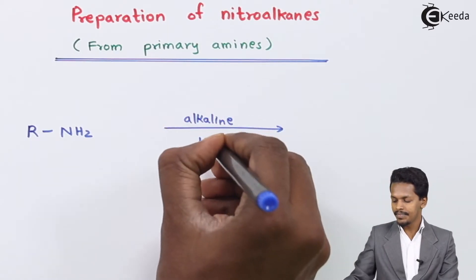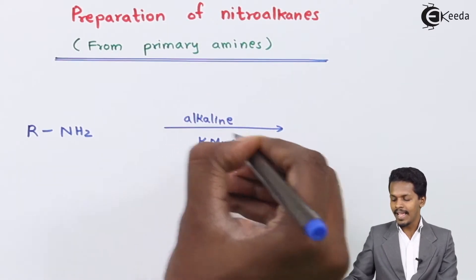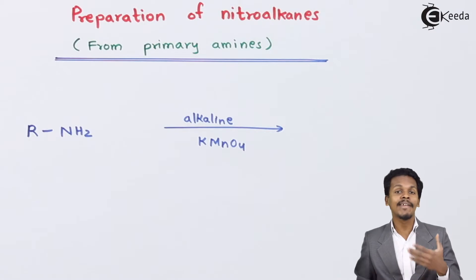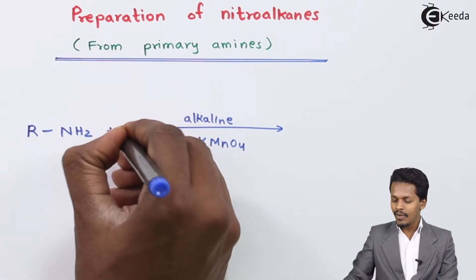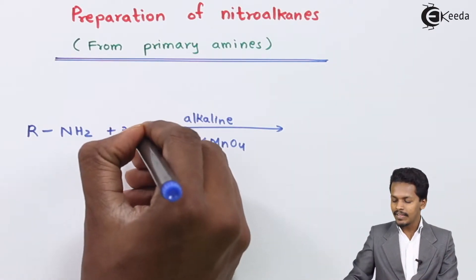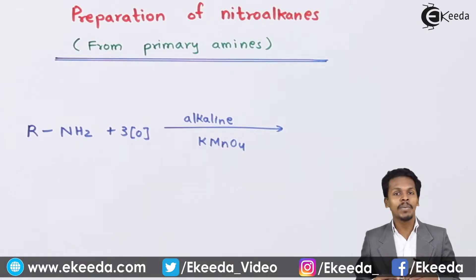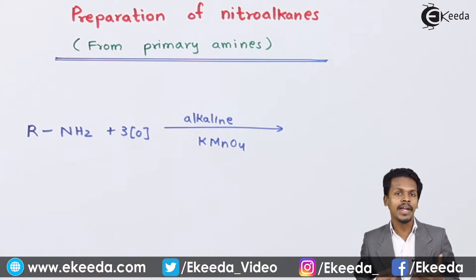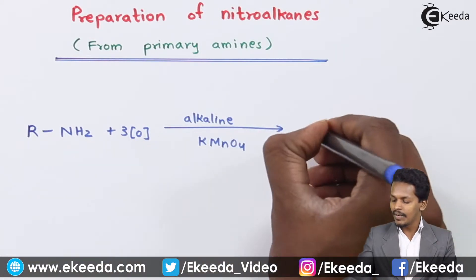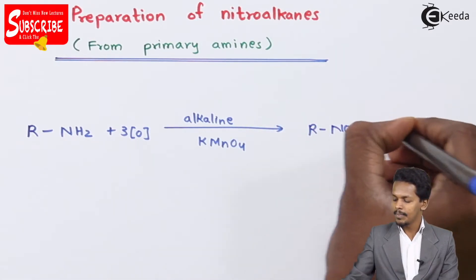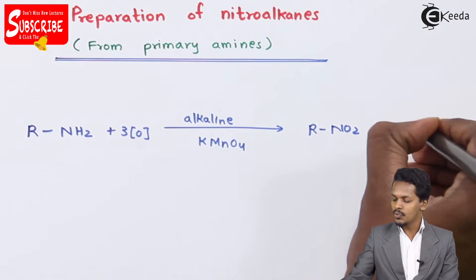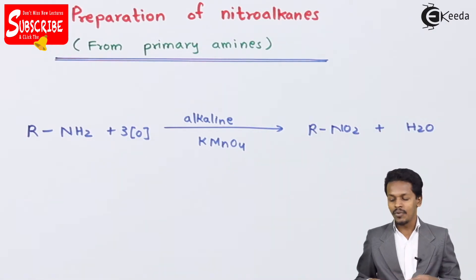This alkaline KMnO4 solution is an oxidizing agent, because of which there will be three nascent oxygen atoms that are very helpful in converting the NH2 group into NO2 group. That is why the product we get is R-NO2, with H2O as a byproduct.